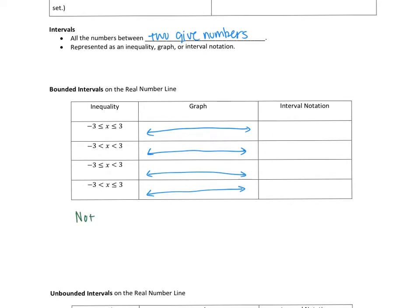Whenever you have inequalities that don't have the line underneath — meaning it doesn't equal that value — you want to use what we call an open circle. It's basically like an O but not filled. And anytime you have the inequality with the equal sign underneath, you want to use a closed circle — draw a circle and then fill it in.